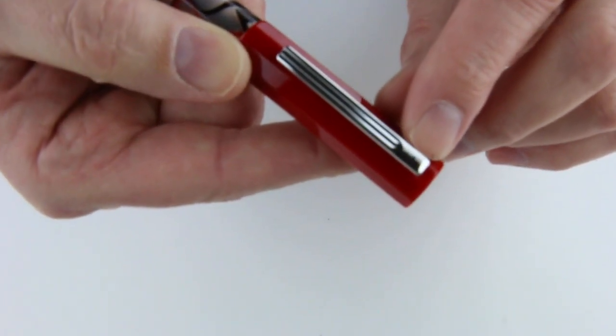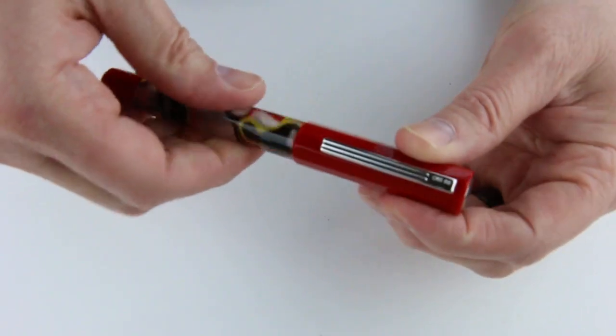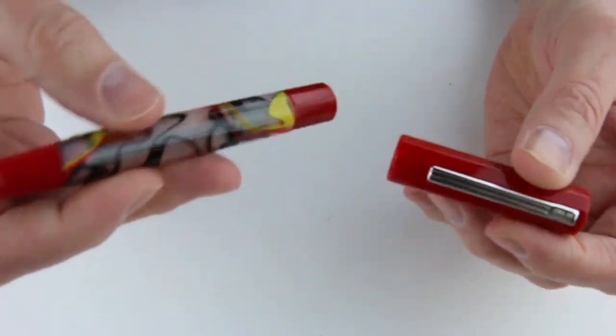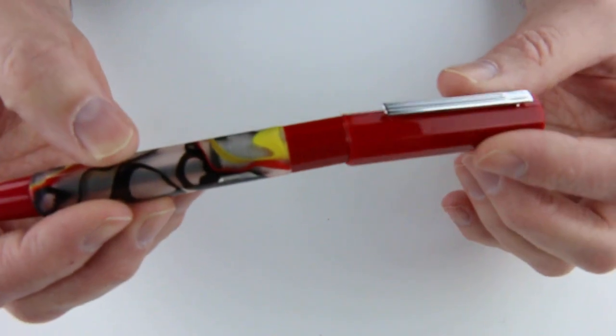The clip does have Opus 88 engraved here on the corner. It is a threaded cap that will unscrew. Takes a few threads to unscrew, and that will not post on the end of the pen.